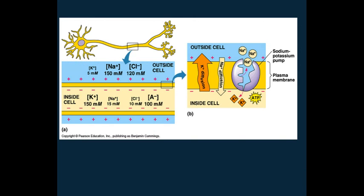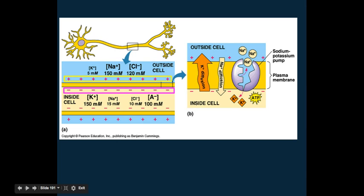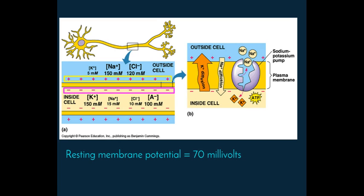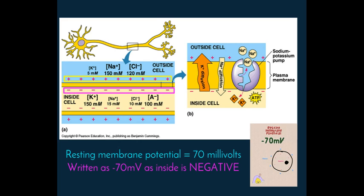A potential difference exists across every cell's plasma membrane. The side of the membrane exposed to the cytoplasm is negative while the side exposed to the extracellular fluid is positive. So inside the cell is negative and outside the cell is positive. The difference on either side of the membrane results in a cellular voltage which is called the resting membrane potential and is measured at about -70 millivolts. It is written as -70 millivolts which indicates that the inside of the membrane is negative. At this point the membrane is said to be polarized.